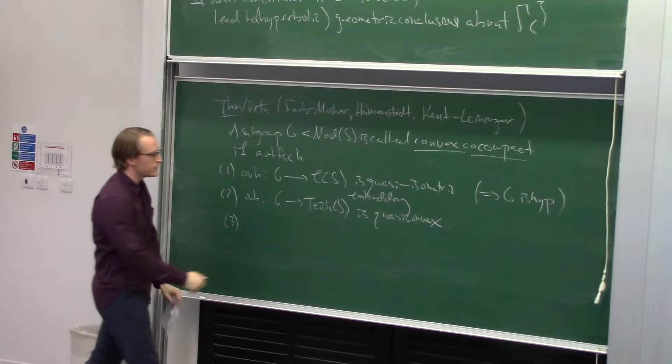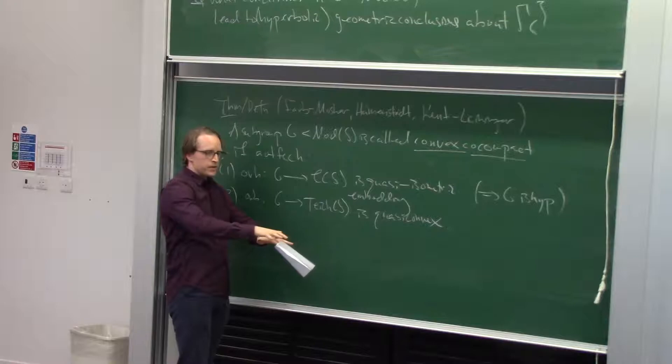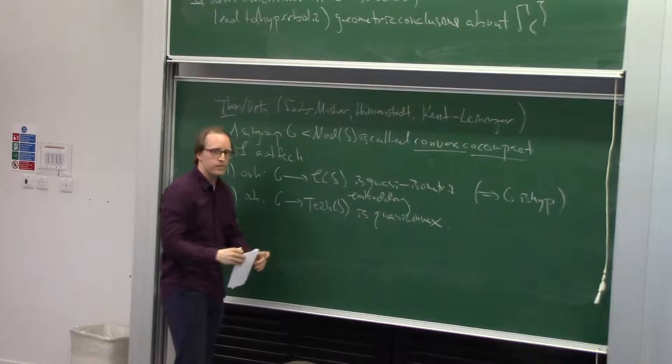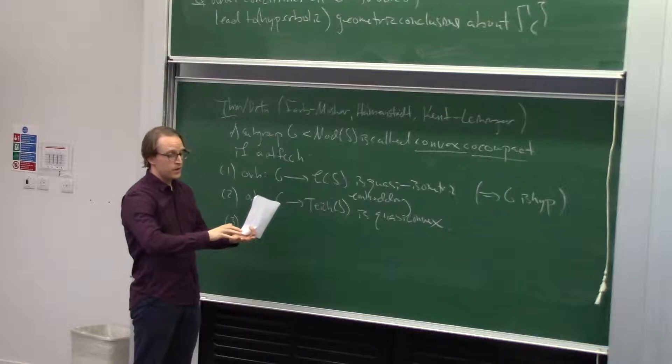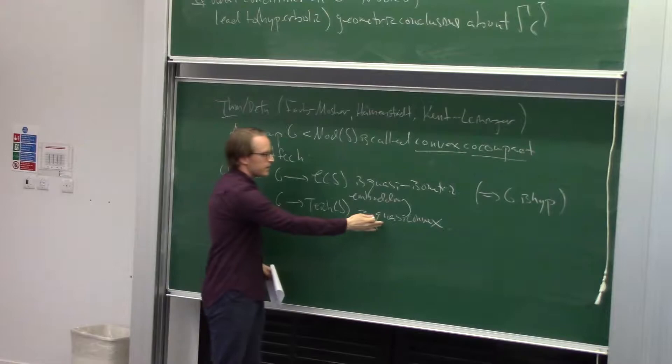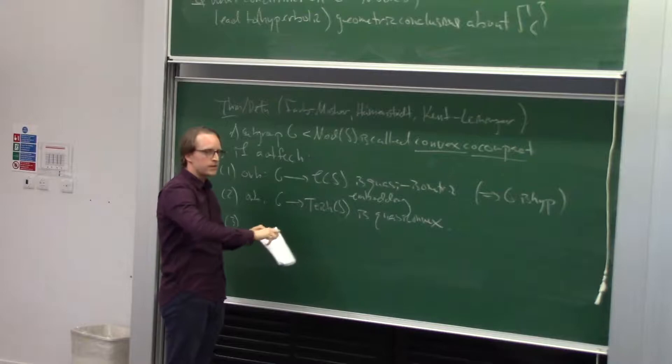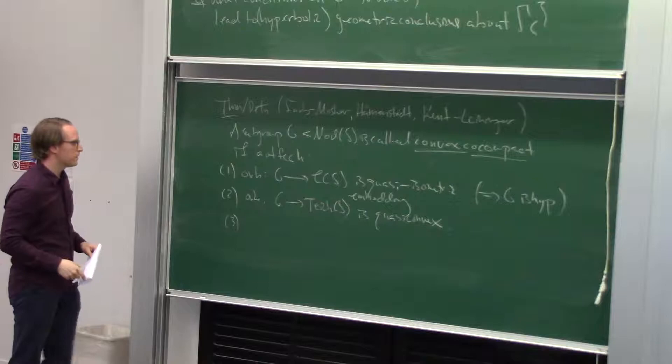What does a quasi-convex orbit mean? The orbit is going to live in some thick part. Hitting a marked surface with a mapping class group element doesn't make any curve on the surface shorter in a degenerate way. Quasi-convexity then says that the Teichmüller geodesics between any points in the orbit have to stay close to the orbit and thus stay in the thick part as well.